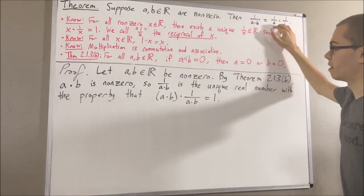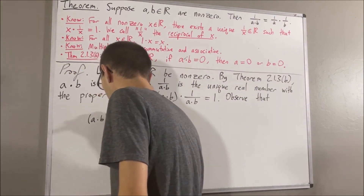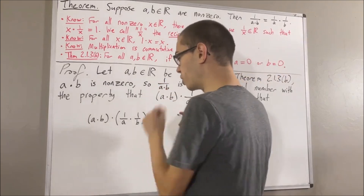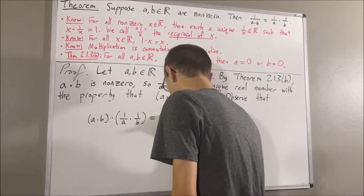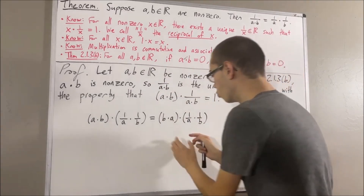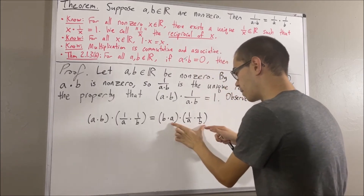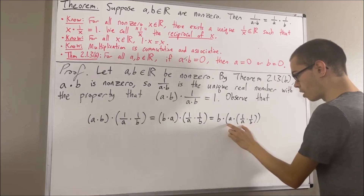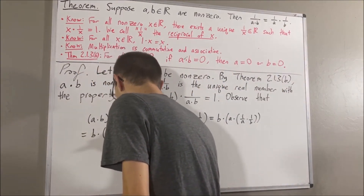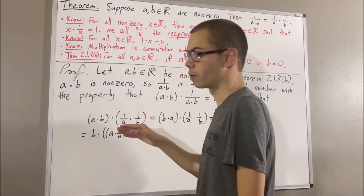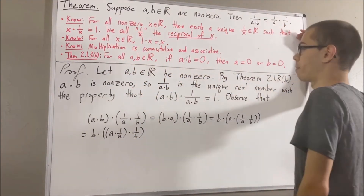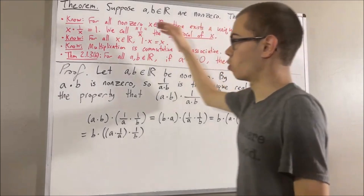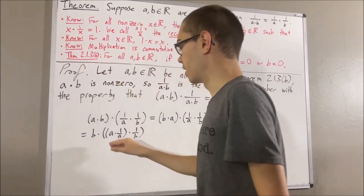Let's multiply 1 over a times 1 over b by a times b, and we want to show this results in 1. To start, let's apply the commutative property and swap the a and b. Then let's apply the associative property, moving the parentheses around a and 1 over a times 1 over b. Then let's apply the associative property again to move the parentheses around a times 1 over a. We expect a times 1 over a to equal 1, which we can show by our first field property: taking x to be a, 1 over a is the unique real number with the property that a times 1 over a is equal to 1.